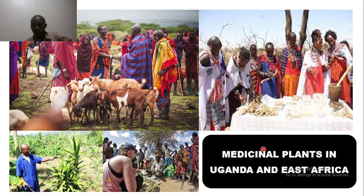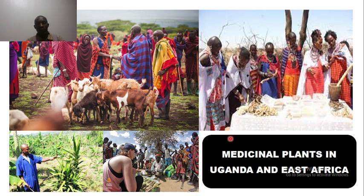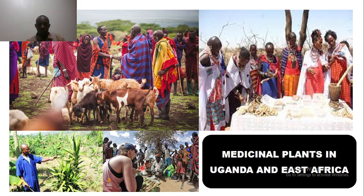When talking about medicinal plants in Uganda and East Africa, it's important to remind ourselves about ethnobotanical surveys. In ethnopharmacology, we conduct ethnobotanical surveys to find out various diseases in various regions or communities and which medicinal plants or natural sources are being used to treat such diseases. For example, Man Nakeb is an ethnopharmacologist who conducted an ethnobotanical survey to find out which drugs are being used to treat animals within the Karamoja region.